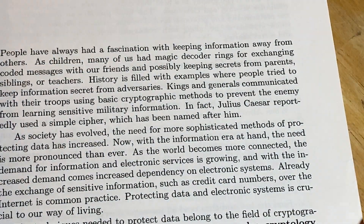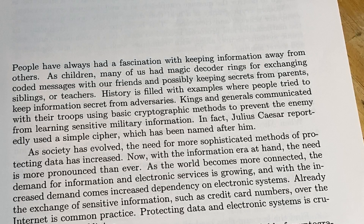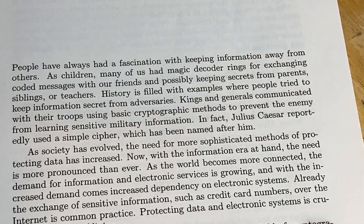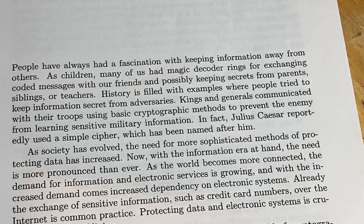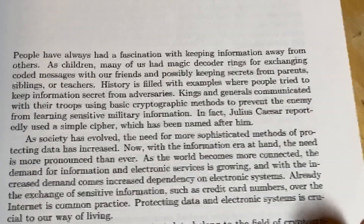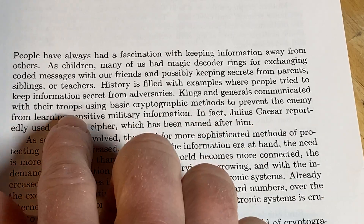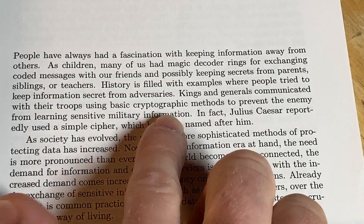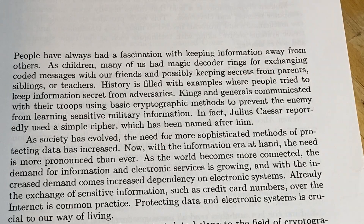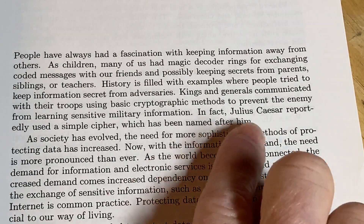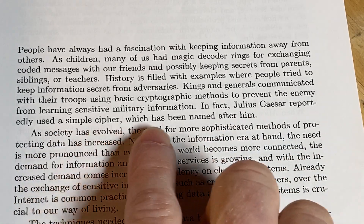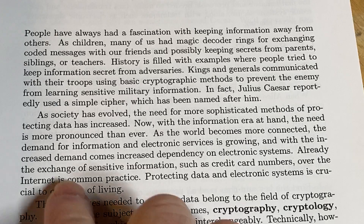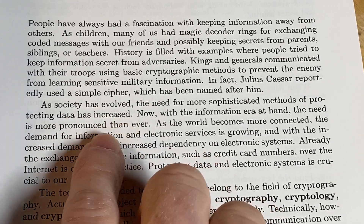The overview section reads: 'People have always had a fascination with keeping information from others. As children, many of us had magic decoder rings for exchanging coded messages with our friends. History is filled with examples where people tried to keep information secret from adversaries.' Kings and generals communicated with their troops using basic cryptographic methods to prevent enemies from learning sensitive military information — for example, Julius Caesar reportedly used a simple cipher that has been named after him.